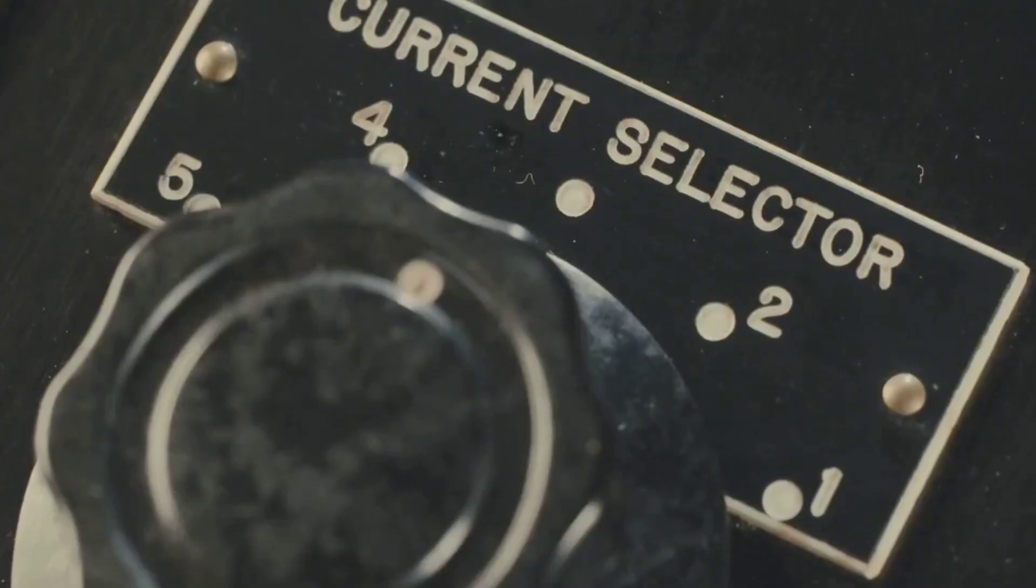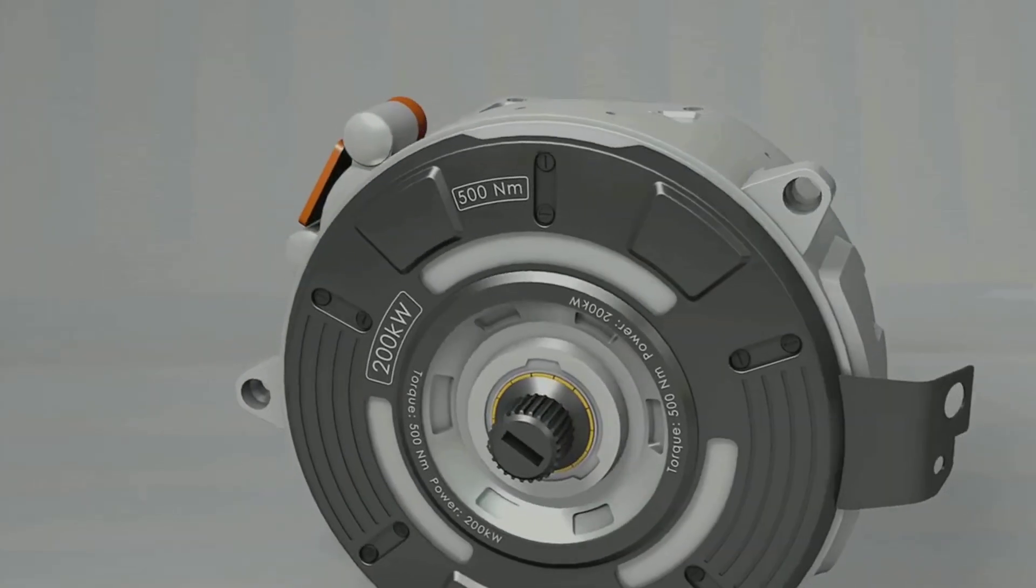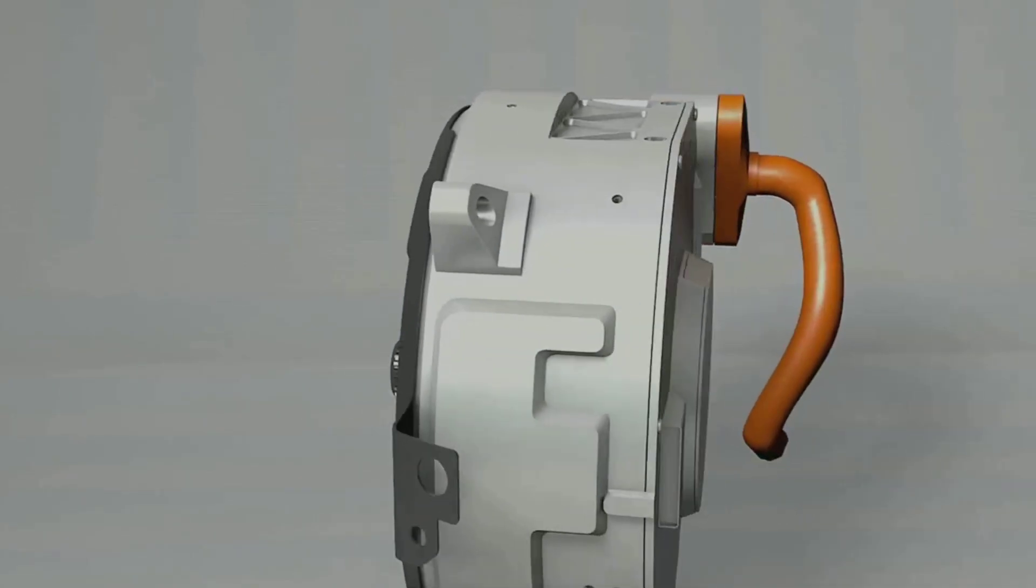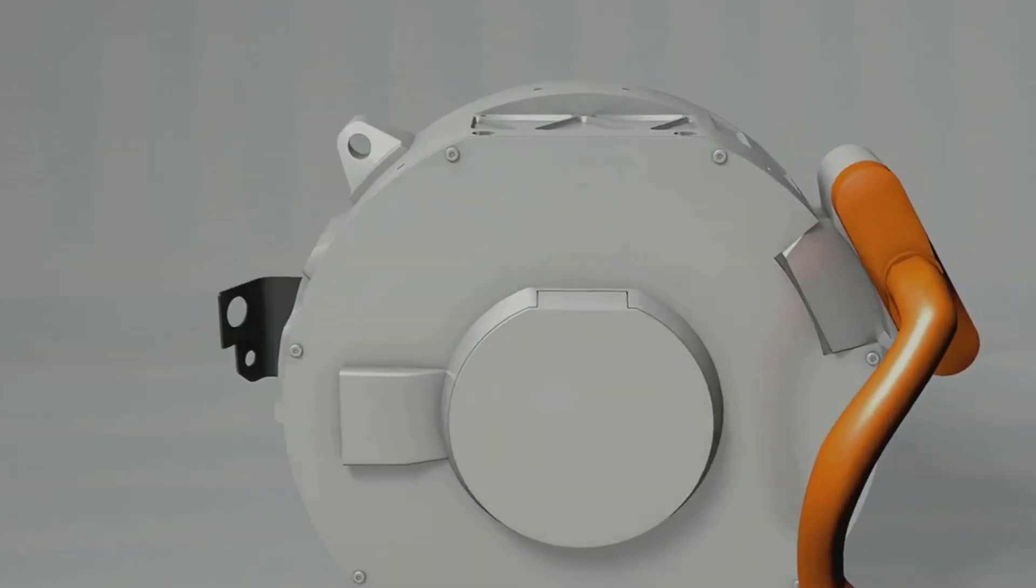But as the loop turns vertical, the forces stop making it spin and start pulling it apart. To keep it spinning, we need to reverse the current every half turn. If we flip the current at just the right moment, the torque keeps pushing the loop around. This clever switching is what turns a simple loop into a continuously spinning motor.